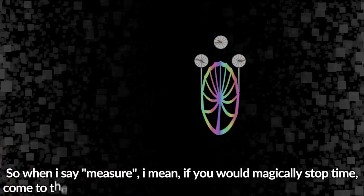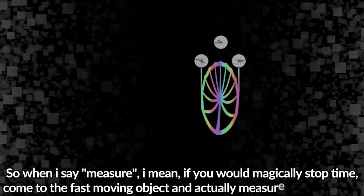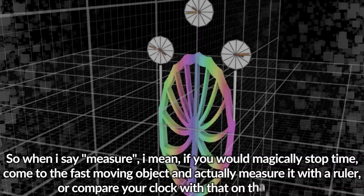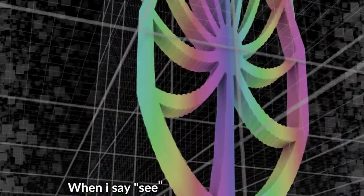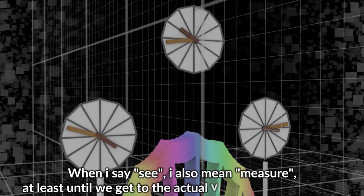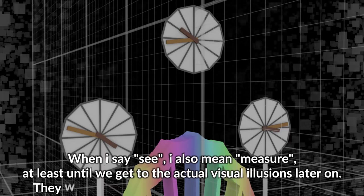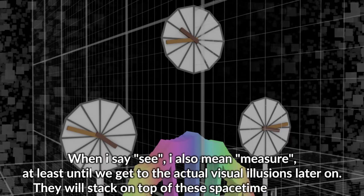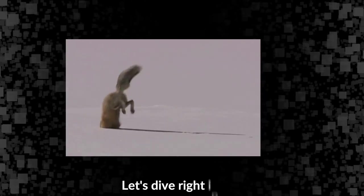So when I say 'measure', I mean if you would magically stop time, come to the fast-moving object and actually measure it with a ruler or compare your clock with that on that object. When I say 'see', I also mean 'measure', at least until we get to the actual visual illusions later on.